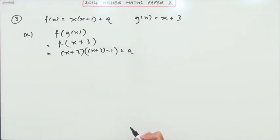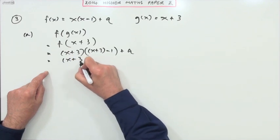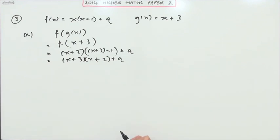Only minus one, and then a little bonus plus q for you there. So what's that then? So that's an x plus three and x plus two plus a q.